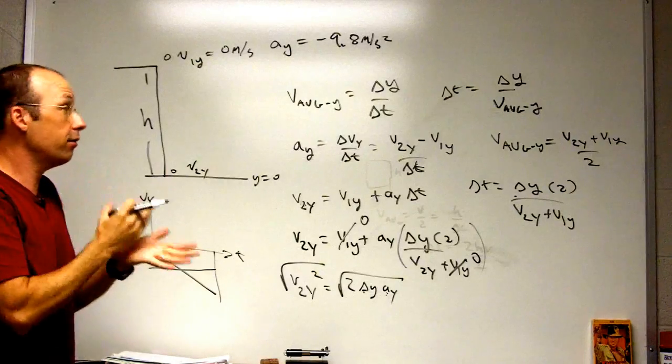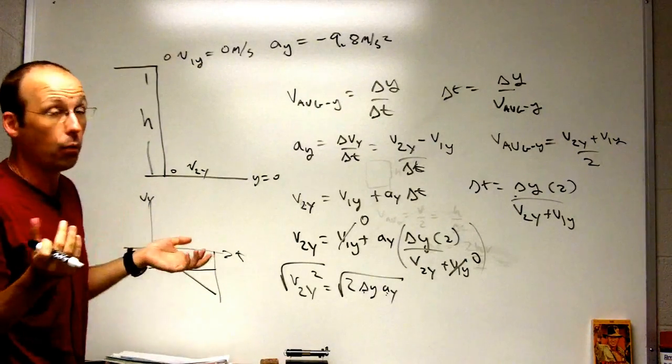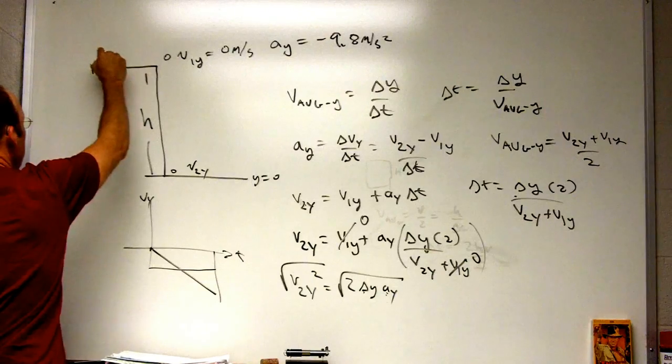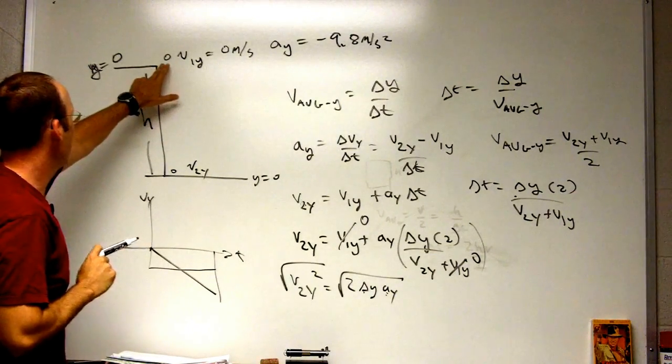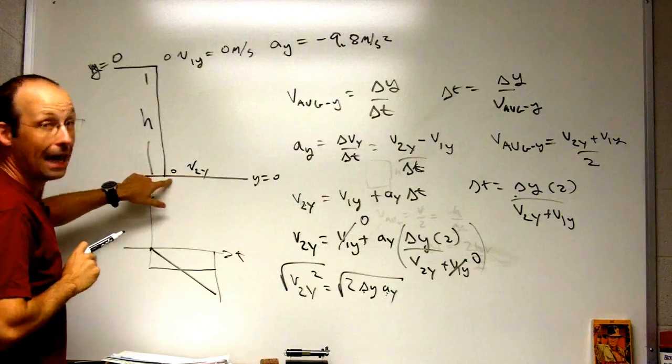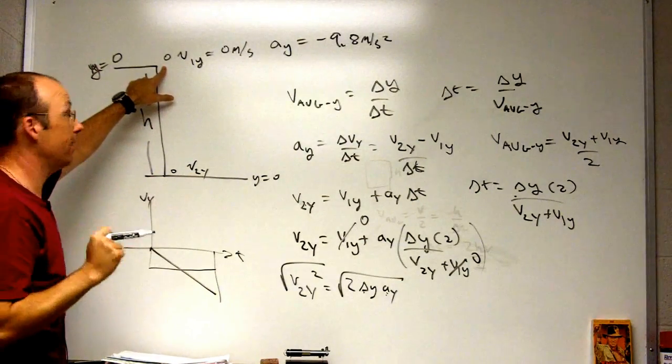There's no such thing as the origin - you can't see it, so you can put it wherever you want. I could put y equals zero up here too. In this case, I'd have the final y is going to be negative h and the initial is zero. Either way I get delta y is negative h.